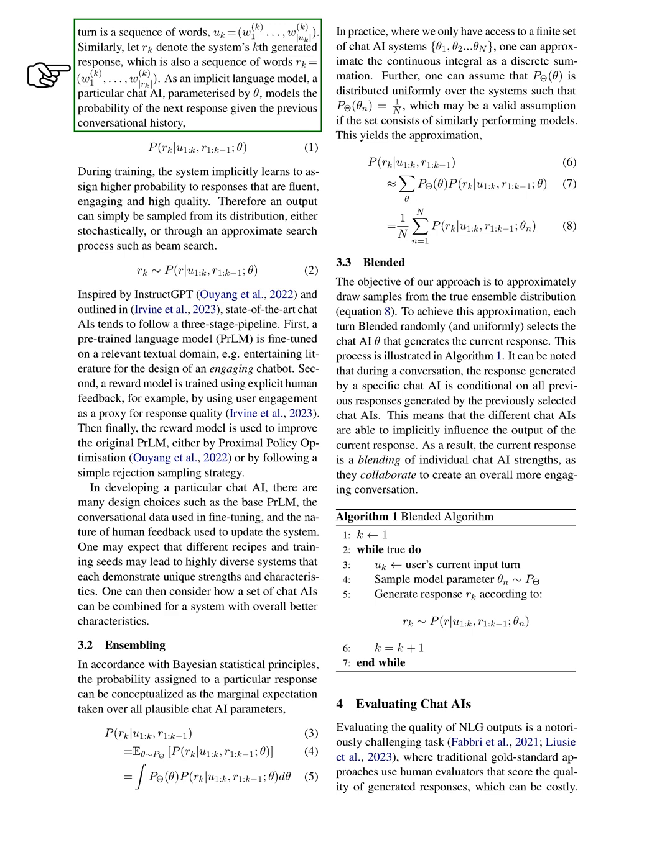During training, the system learns to assign higher probability to responses that are fluent, engaging, and high quality. Therefore, an output can be randomly selected from its distribution, either stochastically or through an approximate search process like BeamSearch.